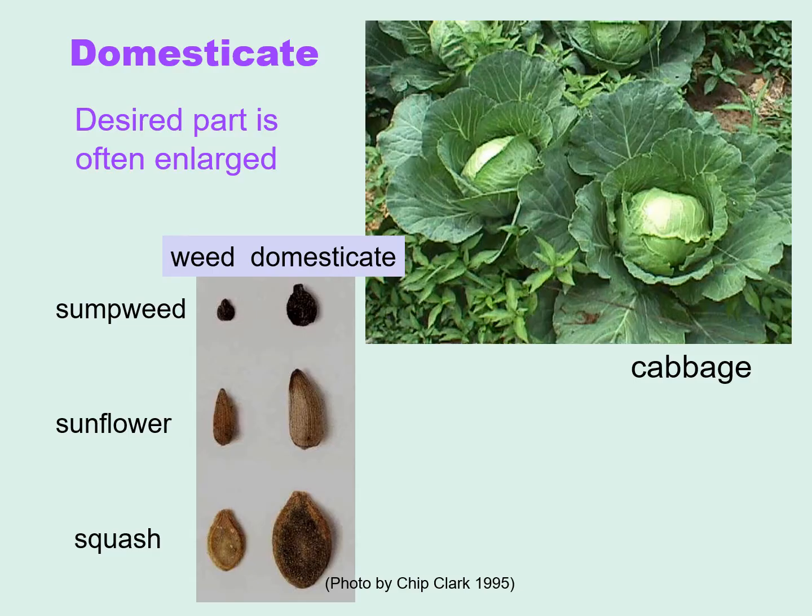In a domesticate, the desired part often becomes enlarged through time — whether that's a leaf, as you see in cabbage, or a seed, like you see in sunflower seeds.